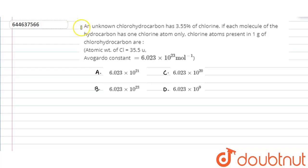Hello, here the given question is: an unknown chloro-hydrocarbon has 3.55% of chlorine. If each molecule of the hydrocarbon has one chlorine atom only, chlorine atoms present in one gram of chloro-hydrocarbon are. We have been given the atomic weight of chlorine as 35.5 units and Avogadro constant as 6.023 × 10^23 per mole.